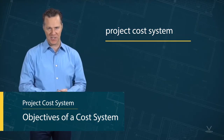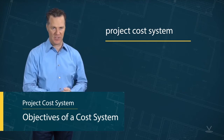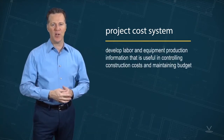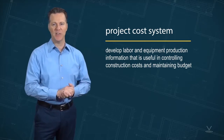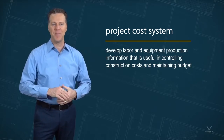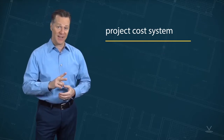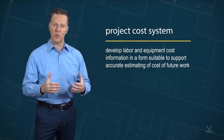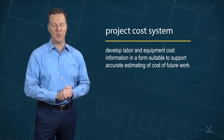The project cost system is designed to accomplish two important objectives. One is to develop labor and equipment production information that's useful to project management and supervision in controlling construction costs and maintaining them within the budget. The second is to develop labor and equipment cost information in a form suitable to support the accurate estimating of the cost of future work.